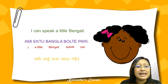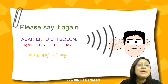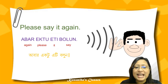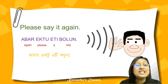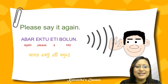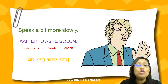Aami ikhtu bangla bolte pari. Please say it again — aabar ikhtu bolun. Aabar means again, ikhtu means please, bolun means say. Say it again — aabar ikhtu bolun.